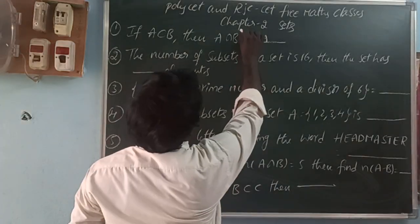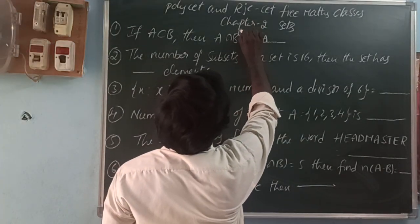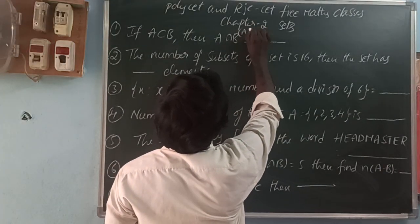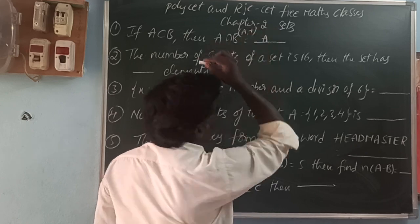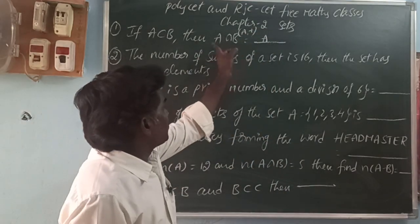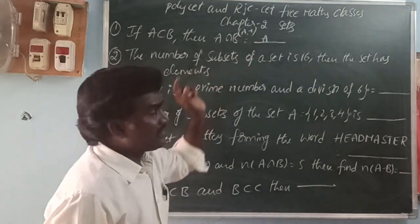The set B contains the elements of A and extra elements. So, in these two sets, what are the common elements? A.